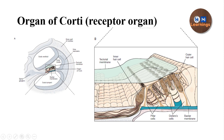On the basilar membrane, the organ of Corti is present and it also extends from the base to the apex of the cochlea. The organ of Corti has four types of cells: a single row of inner hair cells, three rows of outer hair cells, pillar cells present between the inner and outer hair cells, and supporting cells called Deiters cells at the base of the outer hair cells. The tectorial membrane is also present, attached at one end to a ridge of epithelium and free at the other end, covering the organ of Corti. The stereocilia of the outer hair cells are firmly attached to the tectorial membrane.